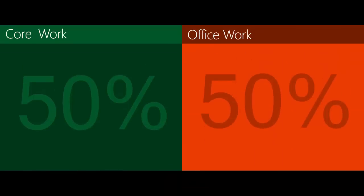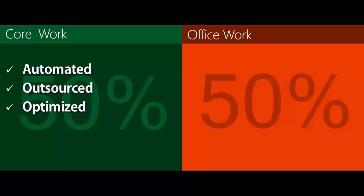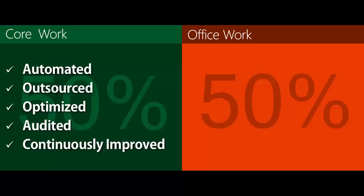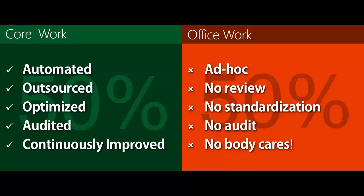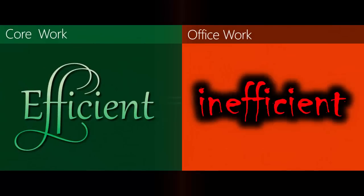We have two kinds of work: core work — the core business — and what we do with Office. Typically we spend around 3 to 4 hours on Office, so roughly 50% office-related work and 50% core work. Core work means ERP, accounting, core business activities. That core work is already well-managed — either automated or outsourced and optimized, with someone auditing and improving it all the time. But when it comes to Office, there is no review, no standardization, no audit. As long as people get it done, nobody cares. So 50% is efficient and 50% is inefficient — and efficient plus inefficient equals inefficient.